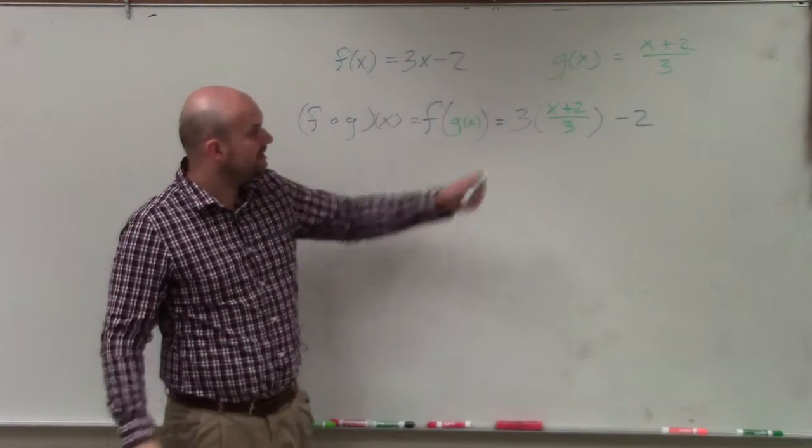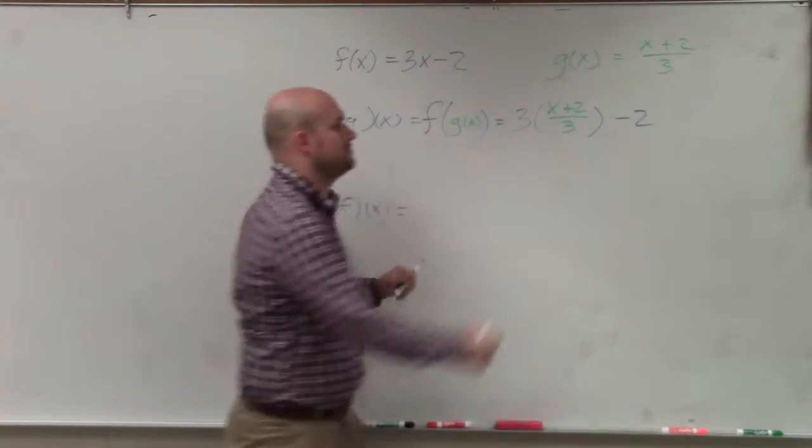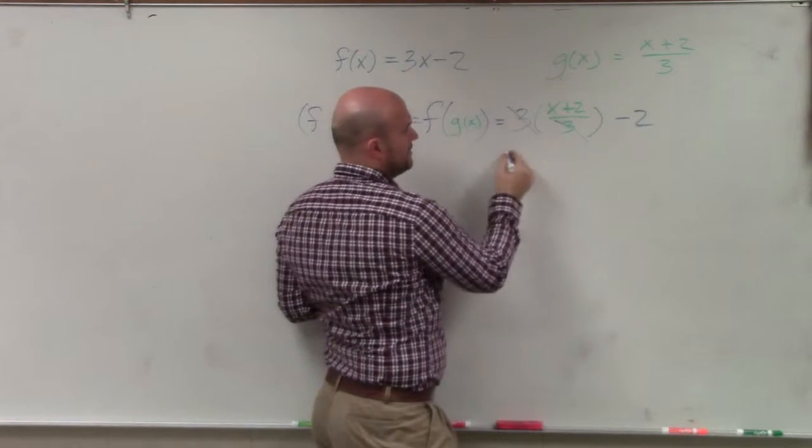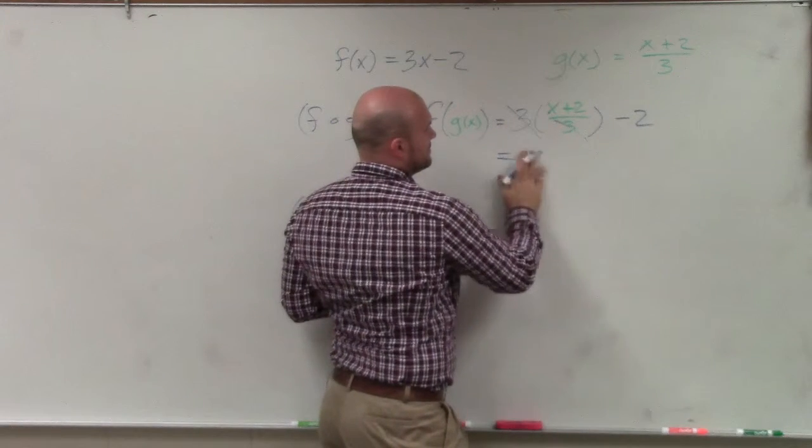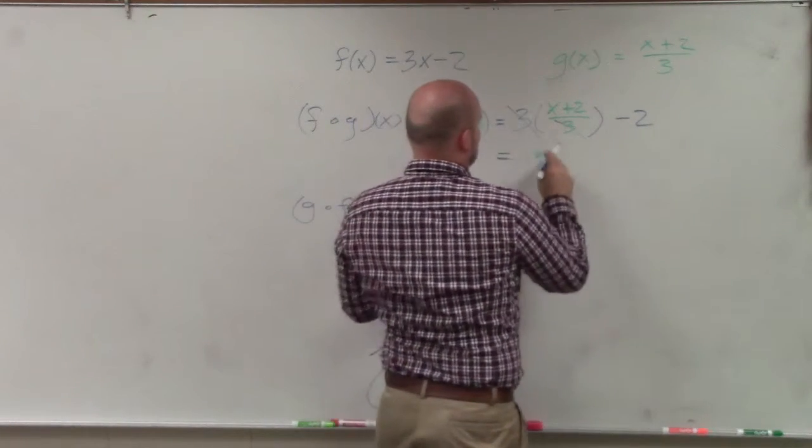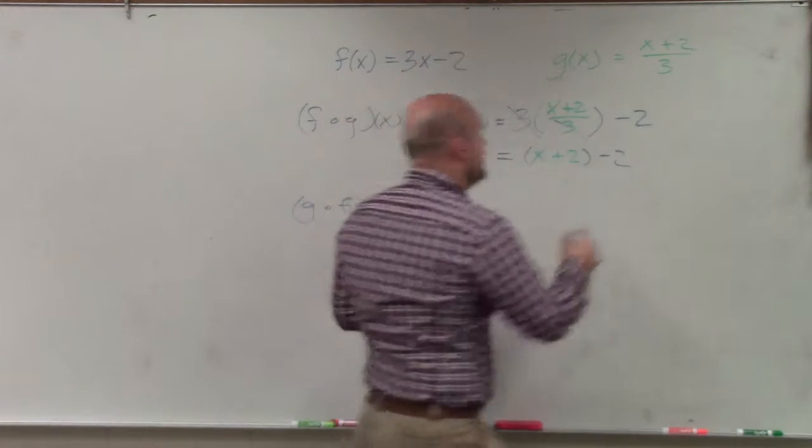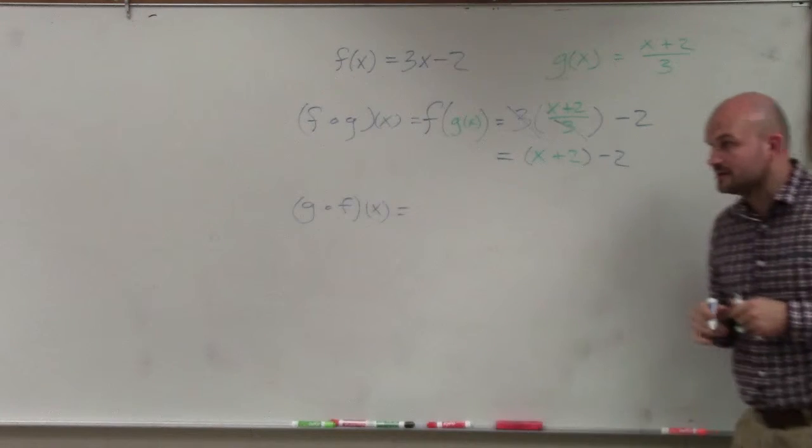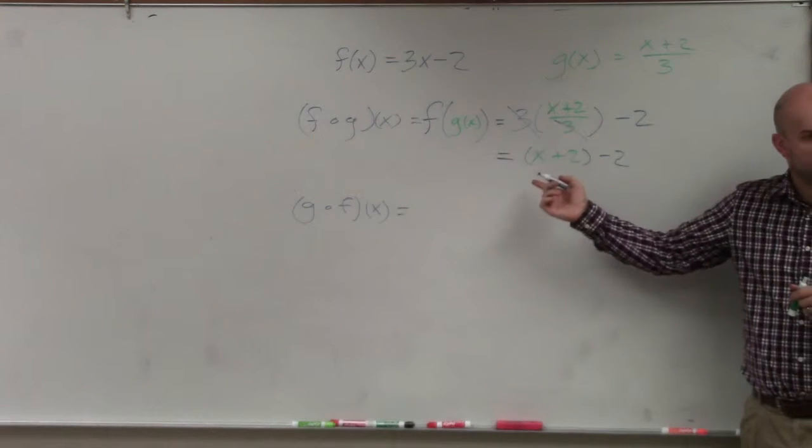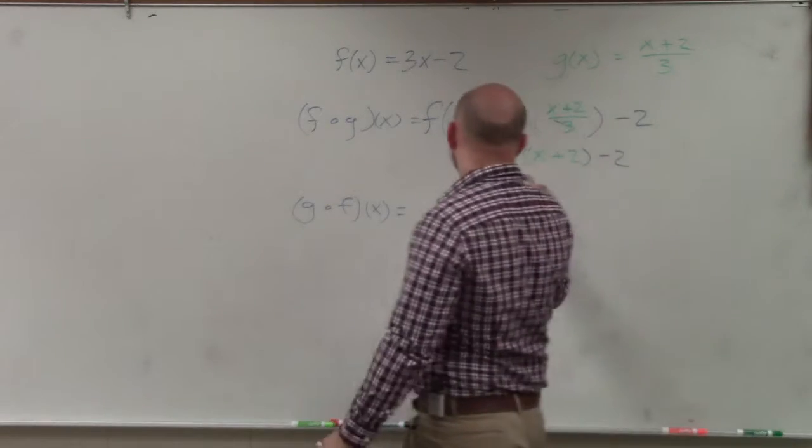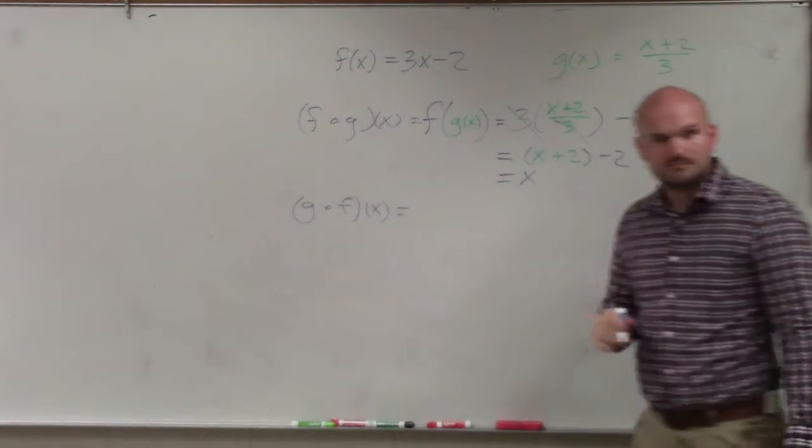Now, just by simplifying, I multiply 3 times that, while the 3's divide to 1. That leaves me with x, basically, x plus 2 minus 2. Well, I don't really need parentheses anymore, because it's not being multiplied by a number. So therefore, I can just take positive 2, minus 2, and that just leaves me with x. Does everybody see that?